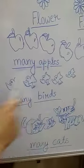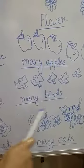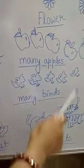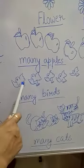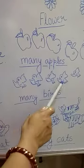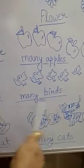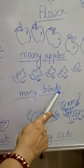This one is plural or singular? Student, this one is plural because here is one, two, three, four, five — five birds. That's why we add 's' here.